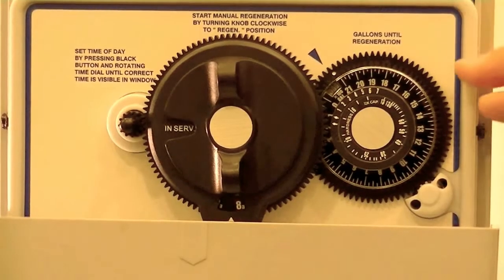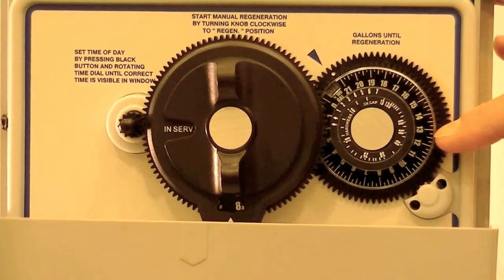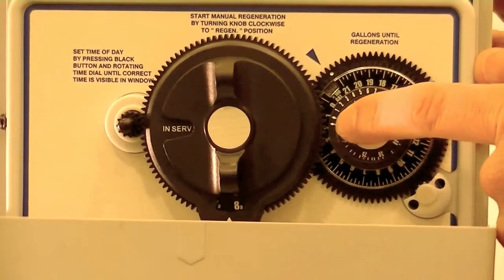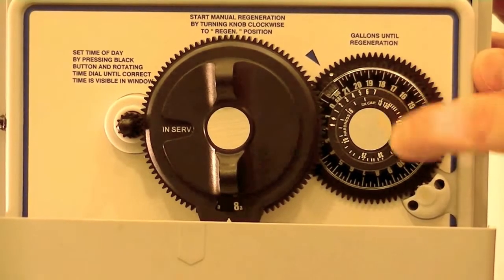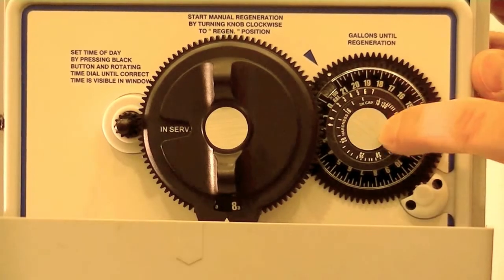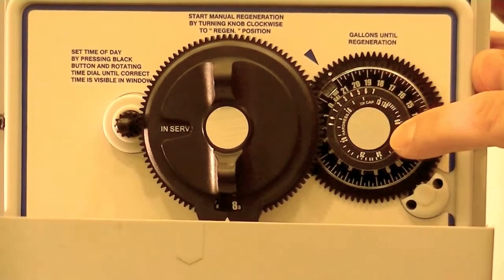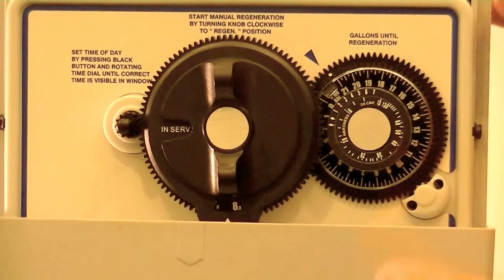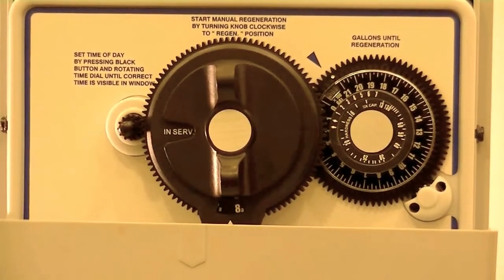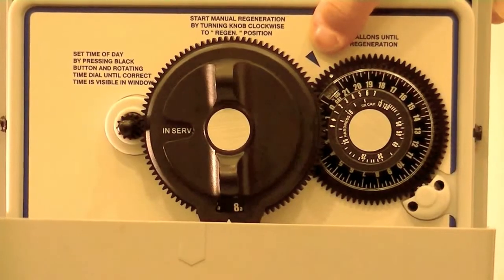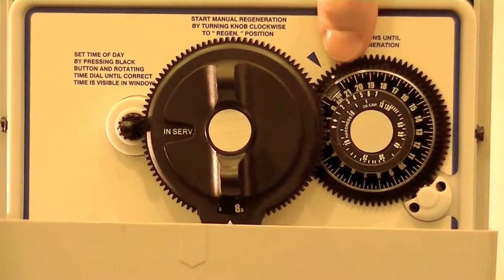So now that you know how hard the water is and the number of people, you can notice here two stick figures and a one through seven, which represent the number of people in the home. And then you have a hardness setting from zero to 100 grains per gallon. So let's say for an example, we have 20 grains of hardness with four people in the home. So the indicator blue arrow and a white dot will be in alignment.